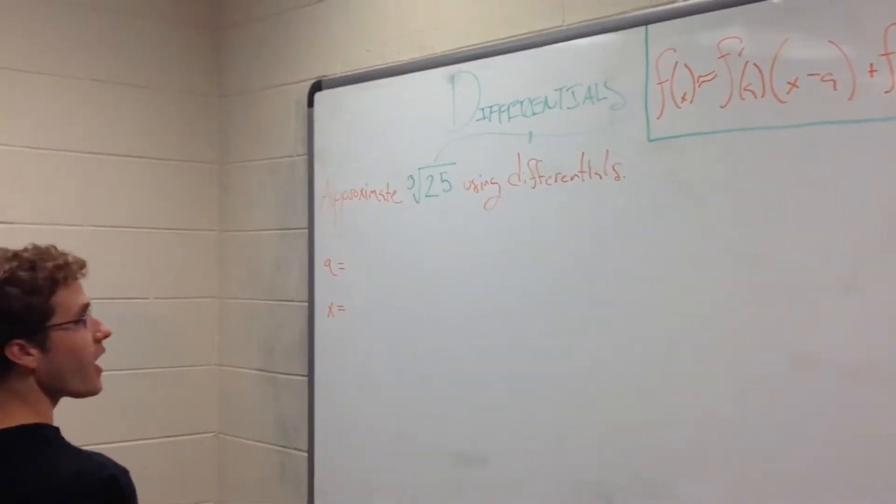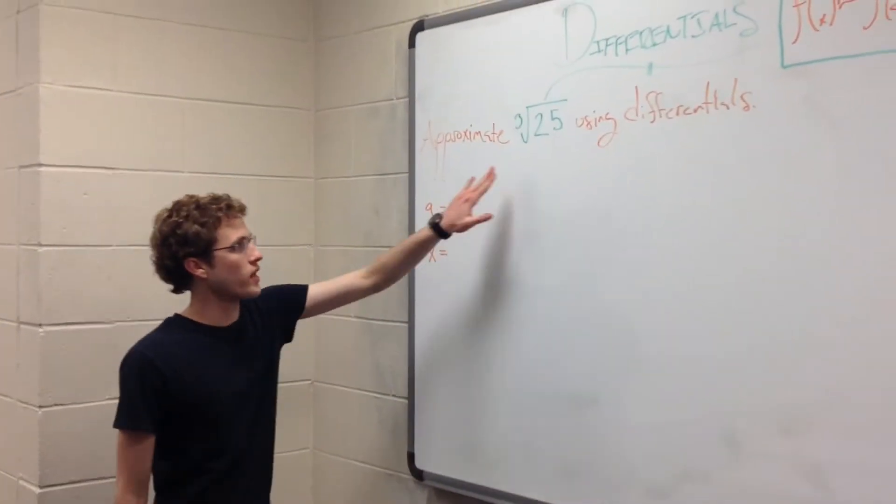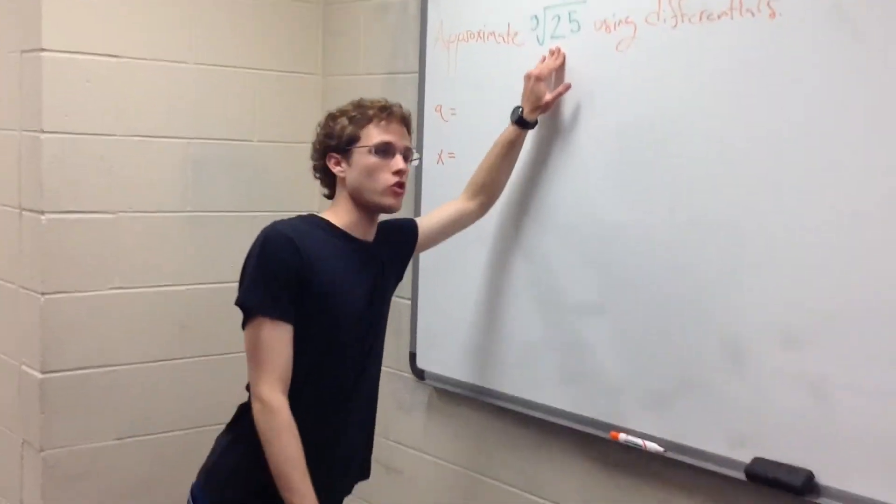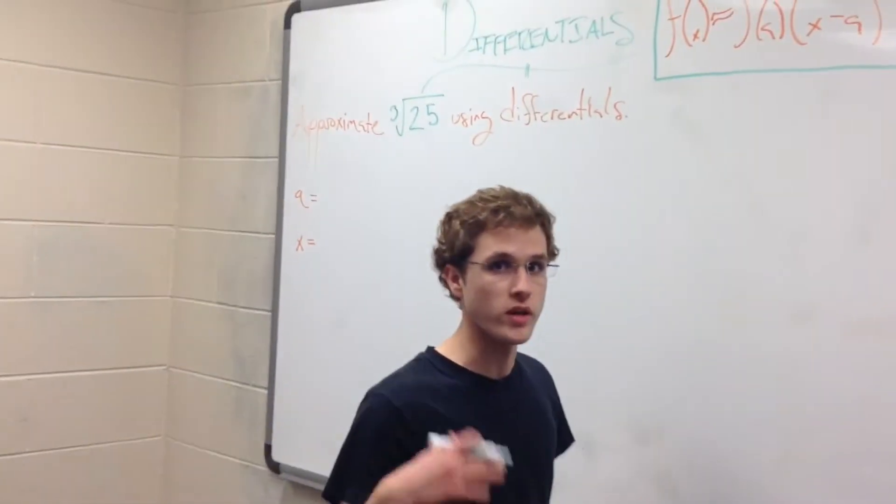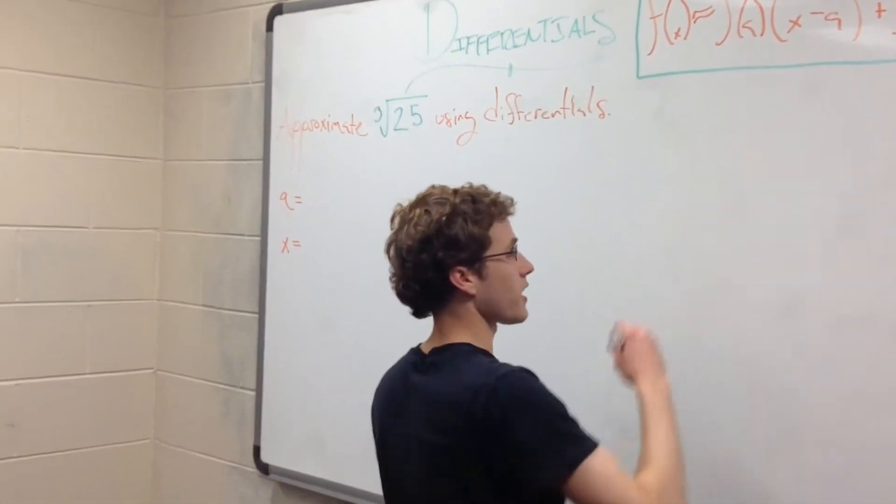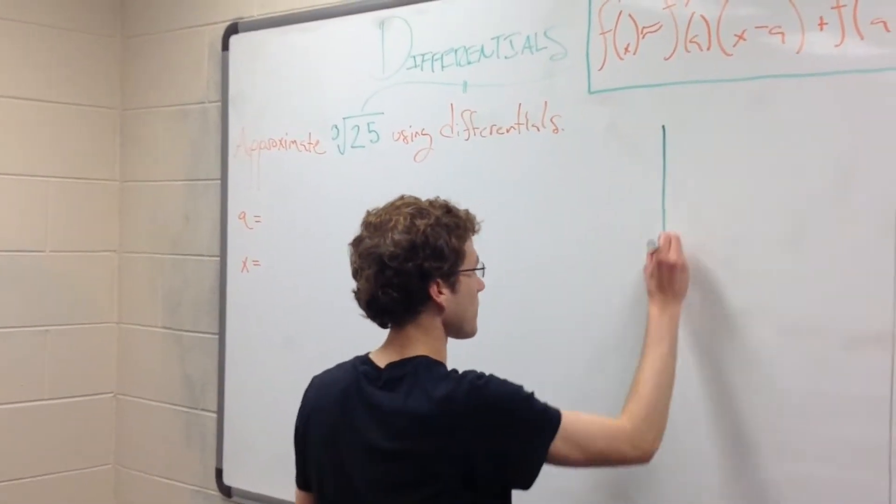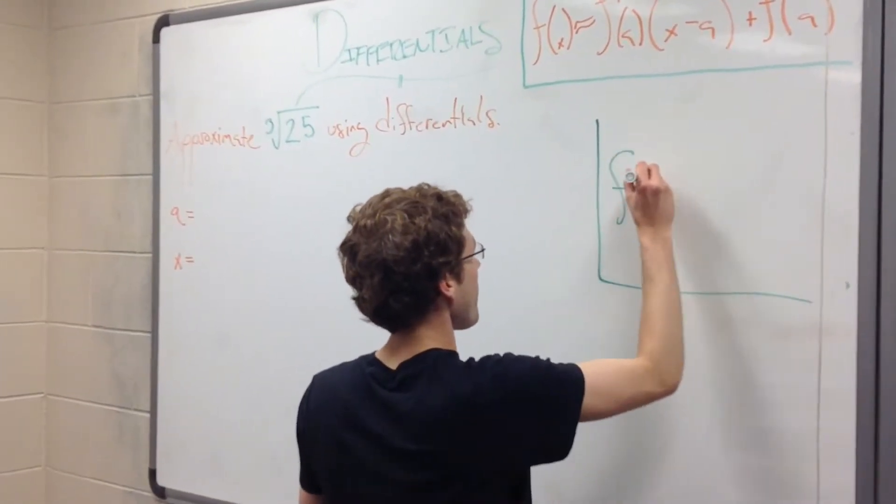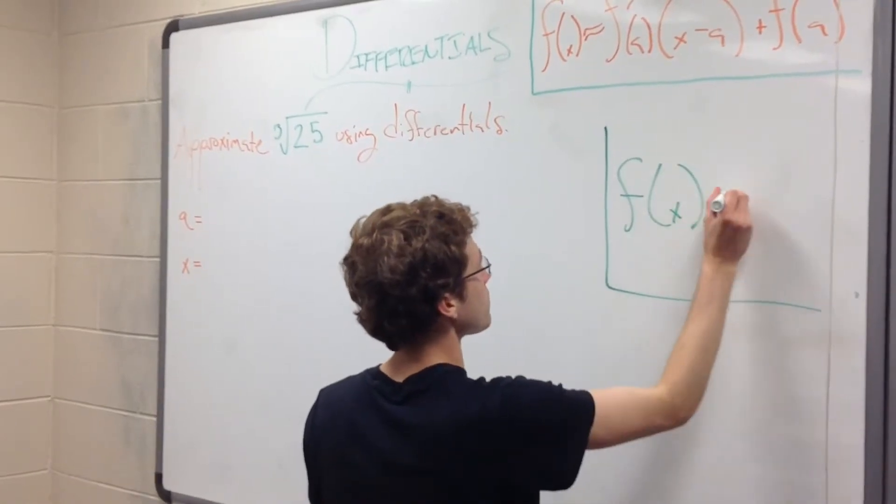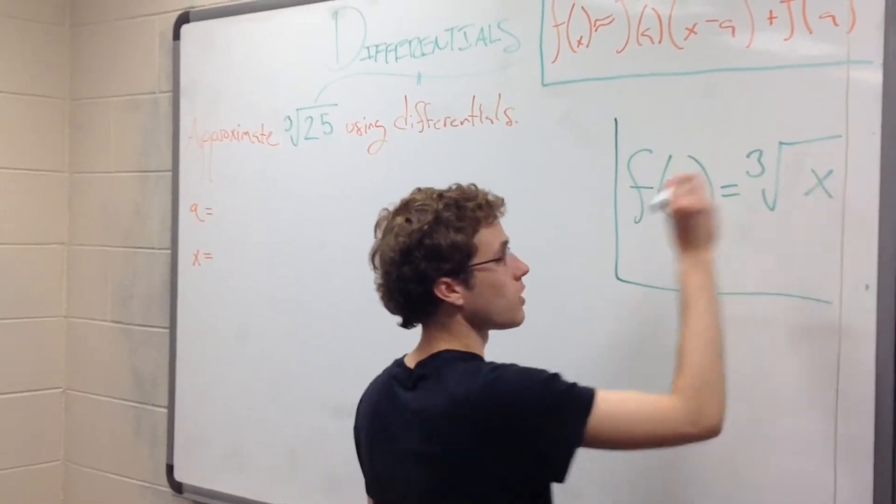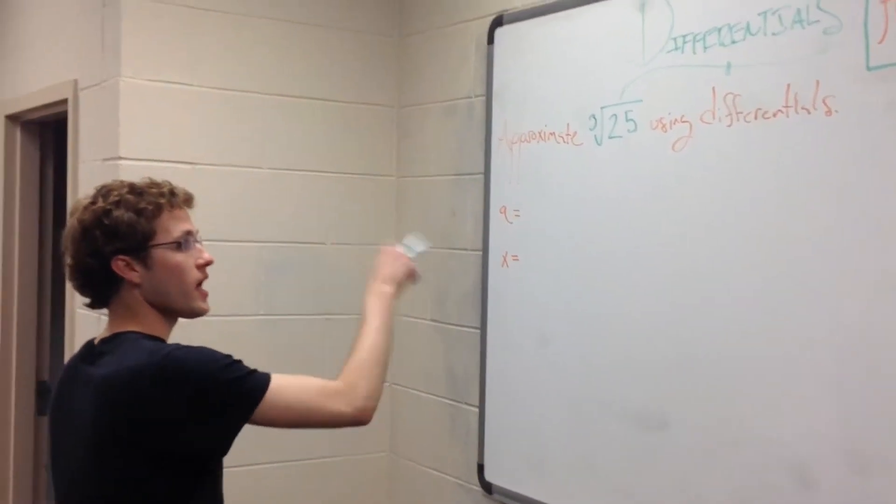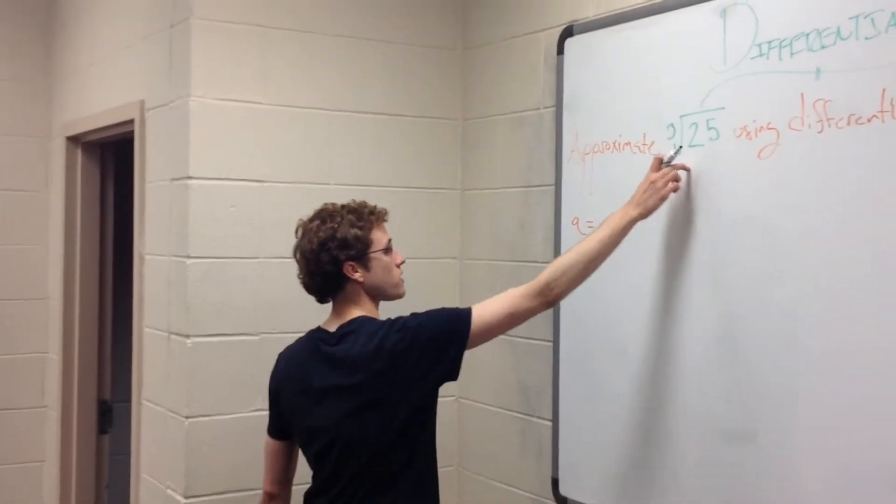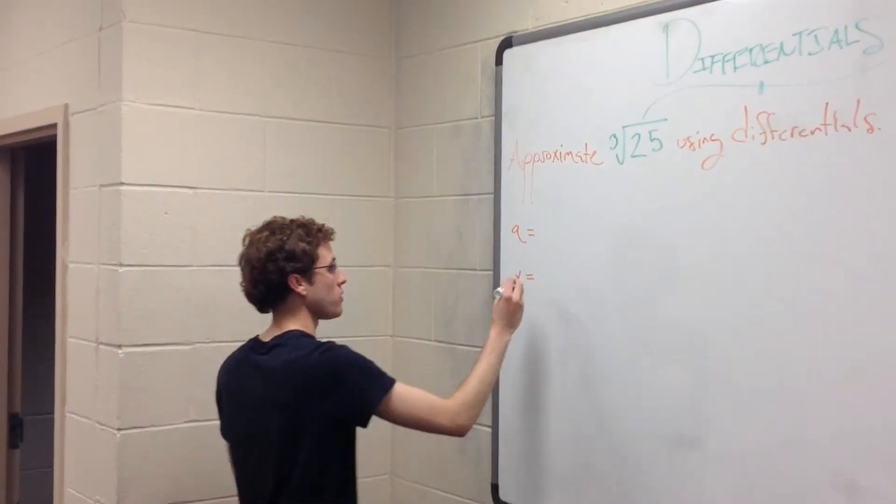Well, here's the thing. Our a, in this case, is going to be a number that is really easy to take the cube root of. And our x is simply what we have underneath the radical sign. So let's go ahead and write this function as if we don't have anything underneath the radical sign, because it will make it easier later when we're taking prime.